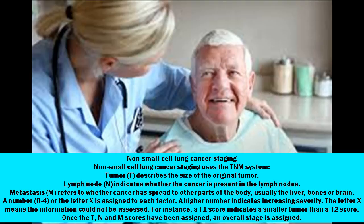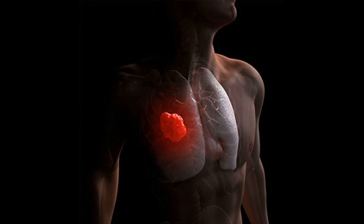Once the T, N, and M scores have been assigned, an overall stage is assigned. Occult Stage: cancer cells are found in sputum, but no tumor can be found in the lung by imaging tests or bronchoscopy, or the tumor is too small to be checked.